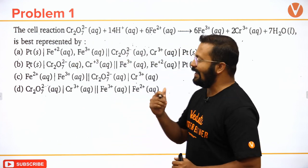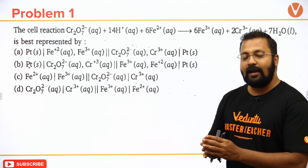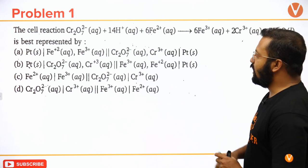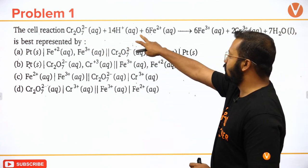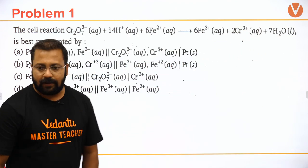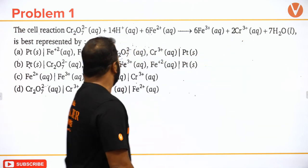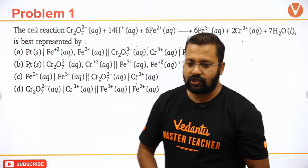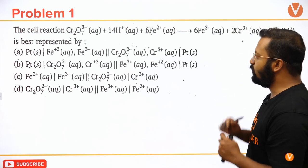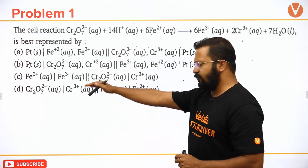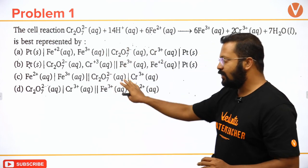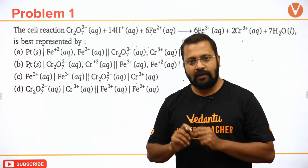The first question is a takeaway from the previous session in which we had learned how to write a cell reaction. The question is: the cell reaction Cr₂O₇²⁻ + 14H⁺ + 6Fe²⁺ → 6Fe³⁺ + 2Cr³⁺ + 7H₂O is best represented by which of the following cell representations? What is your answer?